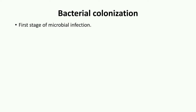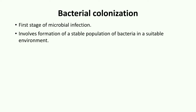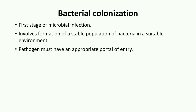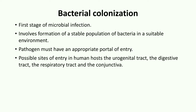Bacterial colonization is the first stage in any microbial infection. Colonization refers to the formation of a stable population of bacteria in a suitable environment. It requires sufficient multiplication of the localized bacterial population to replace bacteria which have been lost either to dispersion, senescence, or local bactericidal mechanisms. The pathogen must have an appropriate portal of entry into a specific tissue. The possible sites of entry in a human host are the urogenital tract, the digestive tract, the respiratory tract, and the conjunctiva.